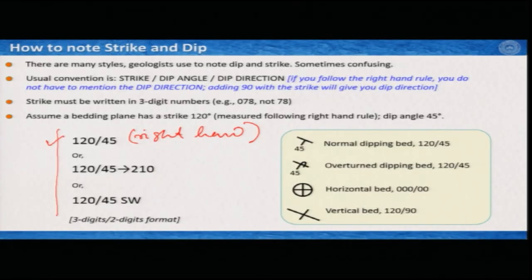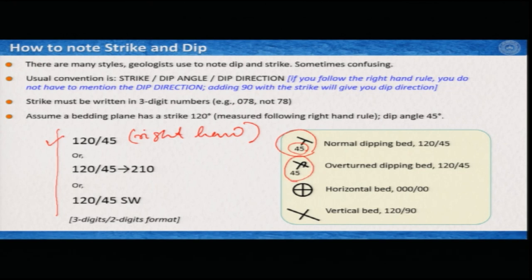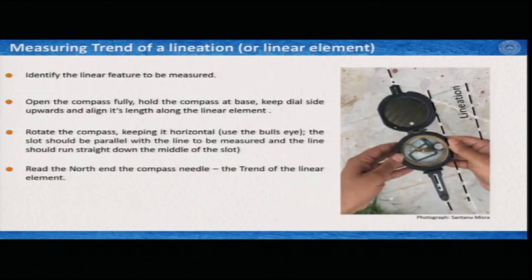For linear features, measurements are done differently but with the same compass and the same measurement principles. I will upload a separate video on measurement of trend, plunge, and pitch of linear features on rock surfaces. For noting trend and plunge, unlike dip and strike which people write in different ways, for trend and plunge there is a more unique style: first write plunge, then write trend. The same rule applies — write trend in three digits, so if trend is 78 degrees, write 078.